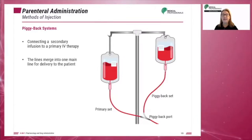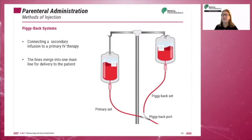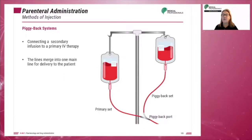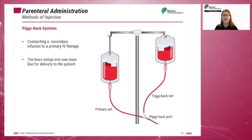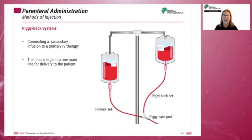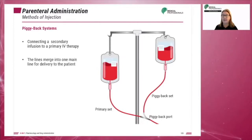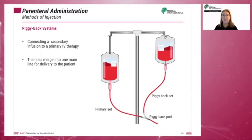The piggyback system can be connected to a drip infusion set. The piggyback connects the secondary infusion to the primary IV therapy. The lines merge into one main line for delivery to the patient. Not all solutions can piggyback into others. Do not piggyback into cardiac medications such as Dilantin to control seizures, heparin which is an anticoagulant, insulin for diabetic care, nutritional feedings such as total parenteral nutrition (TPN) or peripheral parenteral nutrition (PPN), or blood pressure medication.